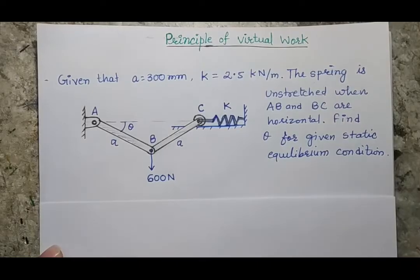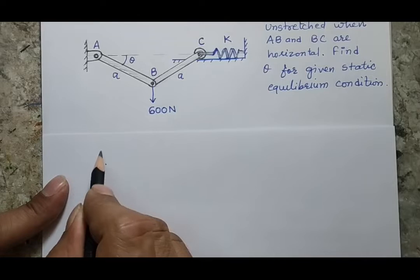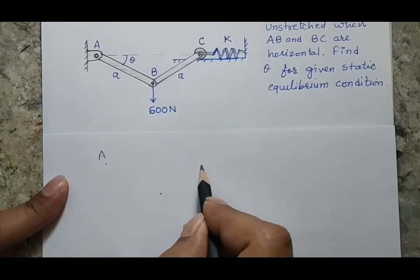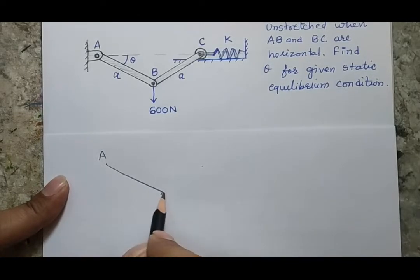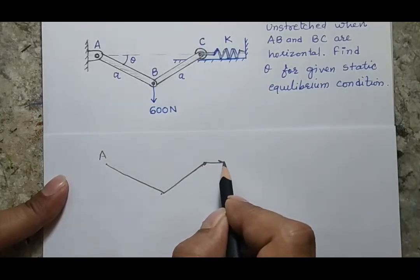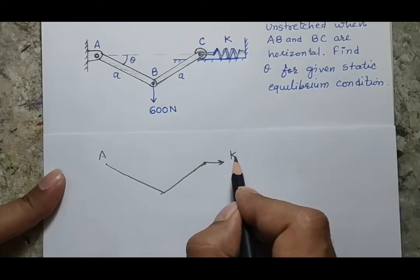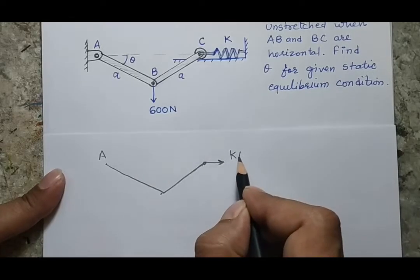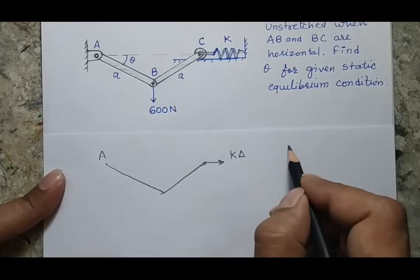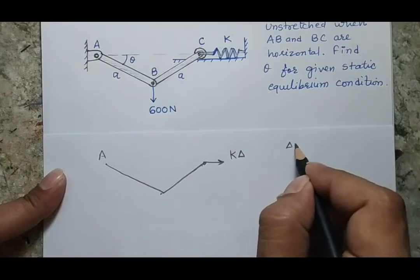The second step is to give a virtual displacement to the system. Here is a line diagram: point A, point B, and point C. In the given state, there is a spring force acting, which can be defined as K·del, where del is the deformation of the spring. Based on the given conditions, we can calculate the del value.